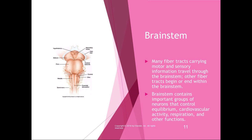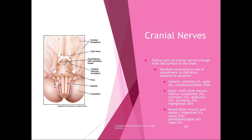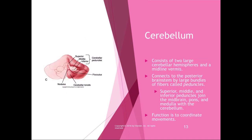The brainstem is at the top of the spinal cord and below the cerebrum — there's a lot going on in the brainstem and we'll talk about that in a later chapter. Cranial nerves are basically the peripheral nervous system of the head, and there are 12 of them. All of the cranial nerves emerge from the surface of the brainstem. The cerebellum is in the posterior inferior part of the brain and its main function is to coordinate movements and has a huge role in motor learning.